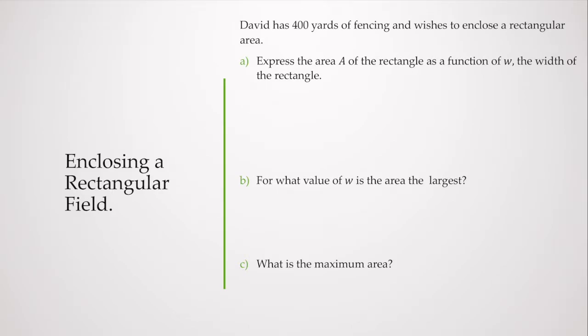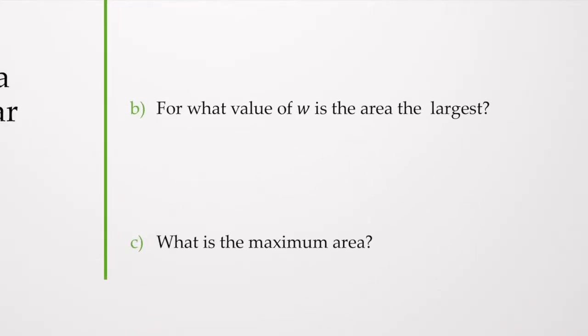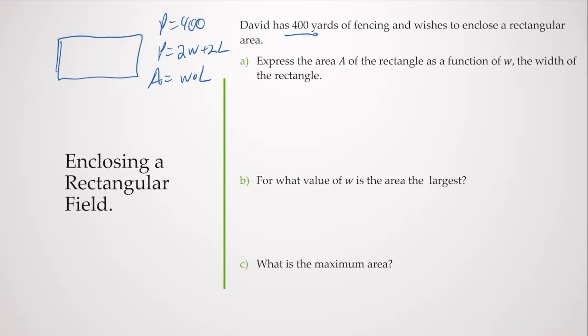David has 400 yards of fencing and wishes to enclose a rectangular area. The perimeter for a rectangular area is 2 times the width plus 2 times the length, and I know that perimeter is 400. Area is width times length. I'm going to express the area of the rectangle as a function of W, the width of the rectangle.